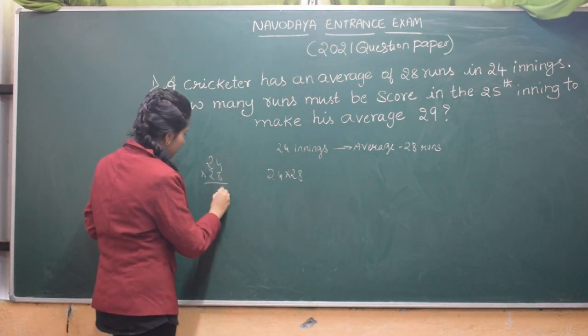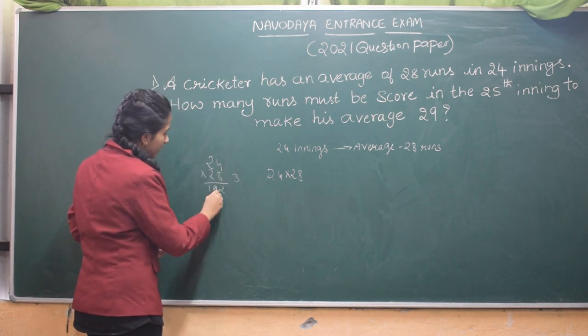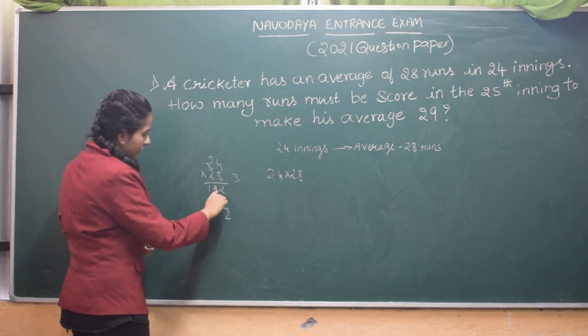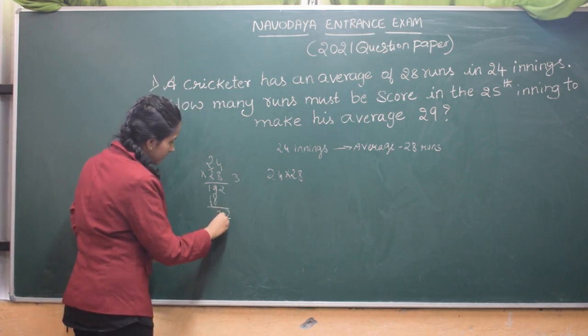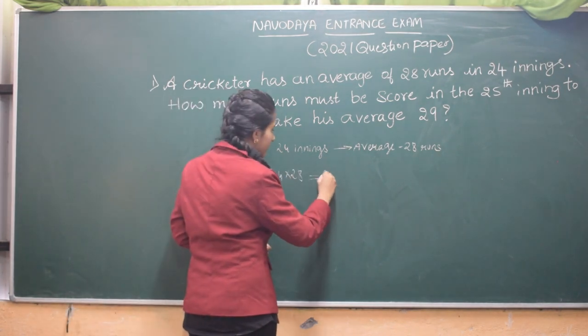8 times 4, 32. 8 times 2, 16, 17, 18, 19. 4 times 2, 8. 2 times 2, 4. 2, 9, 17. 4, 5, 6. So the total number of runs in 24 innings is 672.